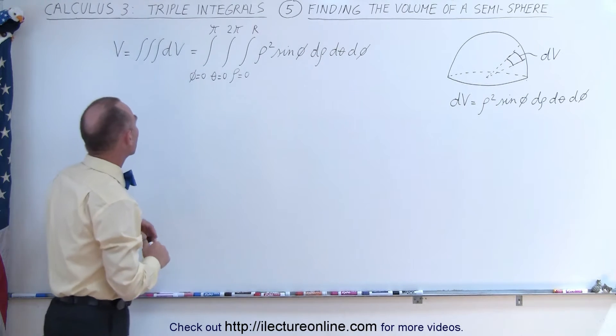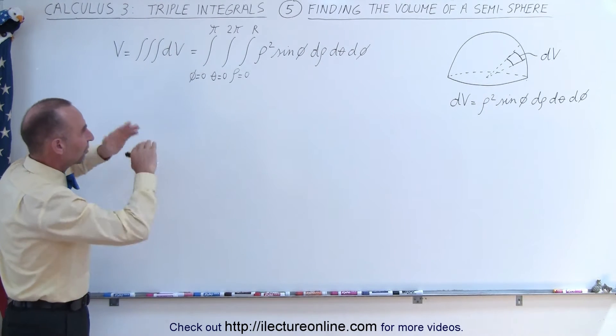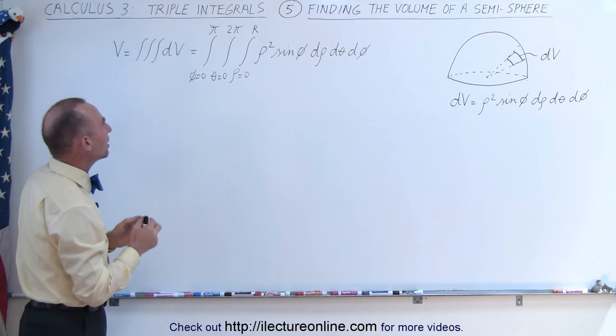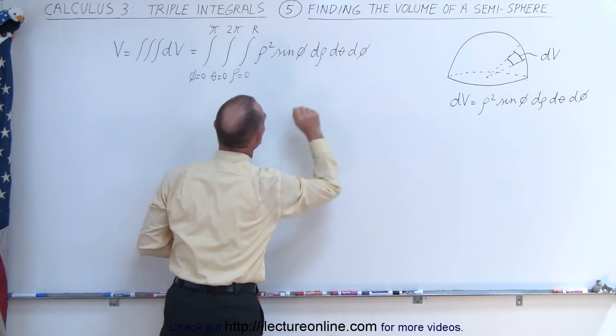All right, coming over here, we now have that the volume of the semi-sphere is going to be the triple integral over the volume element dV, and the volume element, of course, is defined as such.